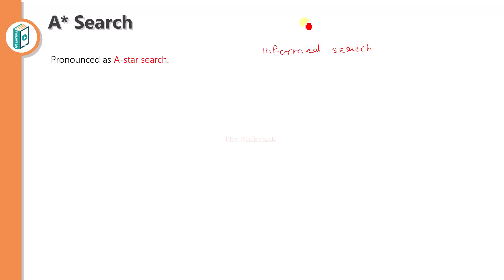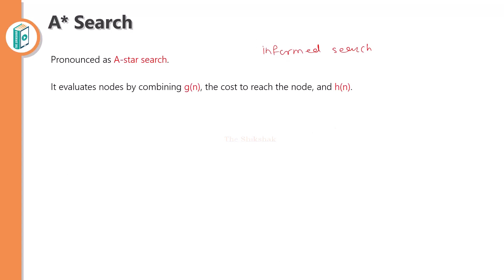First of all, let's see the uninformed search strategy — BFS, DFS, there are many algorithms. In the informed search strategy, we are going to use a formula. The formula consists of the values G(N) plus H(N).